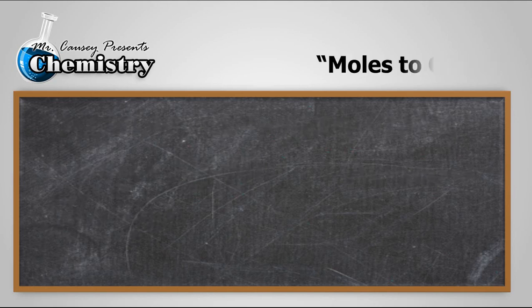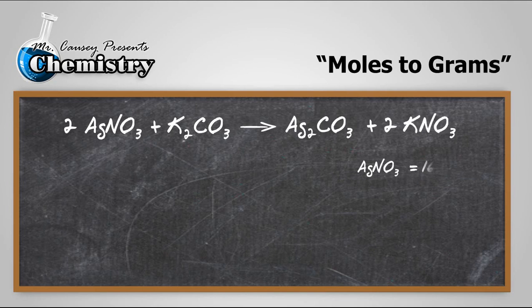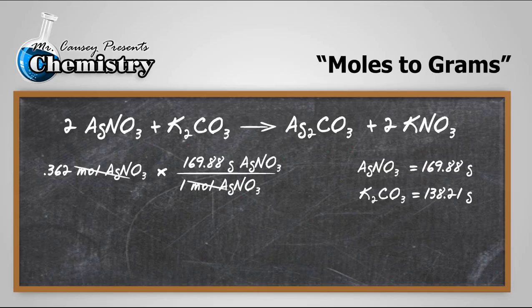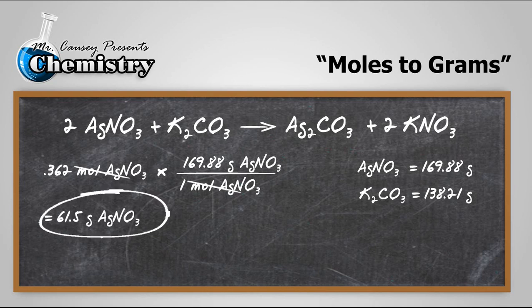And to the next step, now let's change moles of silver nitrate to grams of silver nitrate. And we do that with molar mass. Multiply by that. Make sure that silver nitrate moles cancel out. That way, when we check our units, we're sure to get things set up correctly. Multiply those, and we get 61.5 grams of silver nitrate that will react with the 25 grams of potassium carbonate.